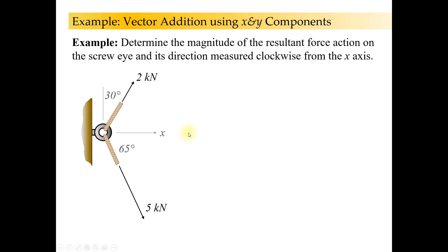So this is the exact same example, just done with the x and y component method instead. What we're going to do is find the x component of 2 and the x component of the 5, and then find the y component of the 2 kilonewtons and the y component of the 5 kilonewtons. X is pointing positive to the right, which makes y pointing positive up.